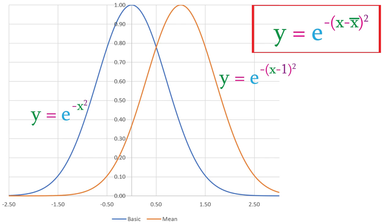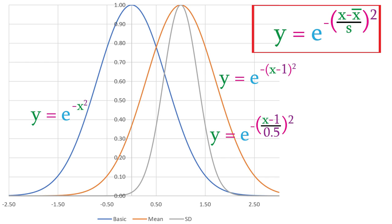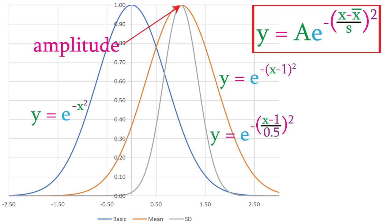Another property that we're interested in is the width of the distribution. That depends on the standard deviation of the values that we're measuring. Right now, the standard deviation is set to 1, but it could be larger or smaller than that. To take this into account, we need to change our equation so that it includes the standard deviation, which gives us this. So if our data has a smaller standard deviation, such as 0.5, the equation would have 0.5 in the denominator of the exponent, and the curve would be this. The last property of a normal distribution is its amplitude. Right now, the height of this curve is 1, but we can make it higher or lower by altering the equation so that it has a constant out front. This is called the amplitude of the curve, and if we change it to 0.5, the height of the curve decreases to 0.5.